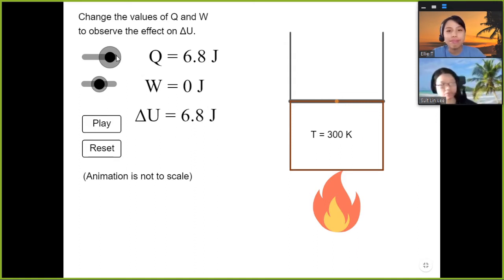But miss, if W is zero, this means that the volume doesn't change. See, the piston didn't move. Still same volume, same box. So we can choose to just add heat to the system without allowing the gas to expand. So the container is sealed.